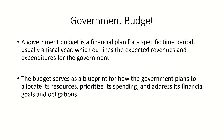For example, the fiscal year for the federal government in the United States starts on October 1st and ends on September 30th. A calendar year, on the other hand, is the 12-month period starting from January 1st and ending on December 31st. It is used for personal or household budgeting and for tax reporting purposes.